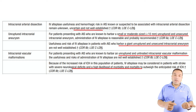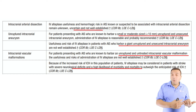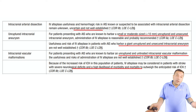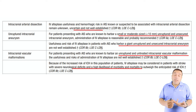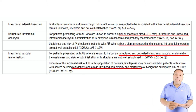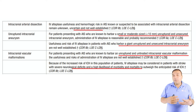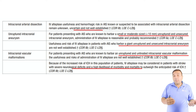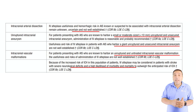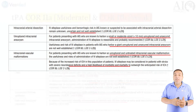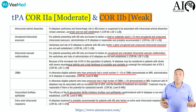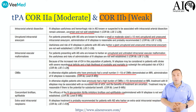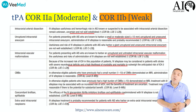Unruptured intracranial aneurysms less than 10 millimeters: go ahead and give TPA. For giant aneurysms it is less certain, but generally if I need to control blood pressure and the patient has a large vessel stroke, I would still consider giving TPA while closely monitoring blood pressure in the neuro ICU.